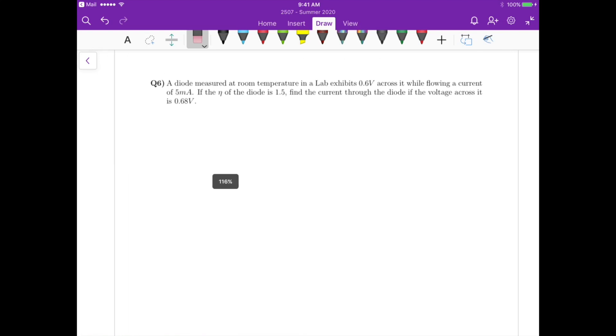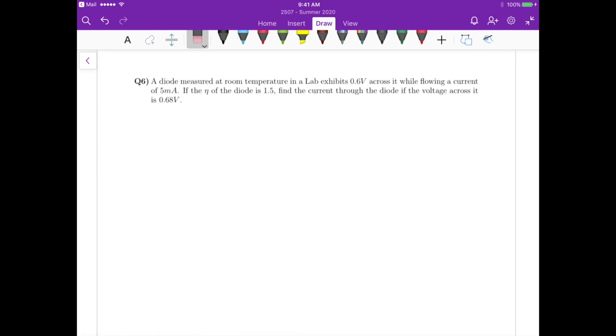So let me go over question 6. For question 6 we have a condition in the laboratory where the diode exhibits 0.6 volts across it and a flowing current of 5 mA.